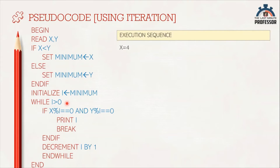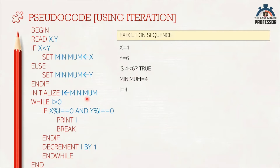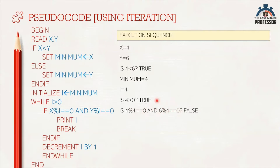The user input x is 4 and y is 6. We find the minimum of x and y: since x is less than y (4 < 6), the minimum is 4, stored in variable minimum. We initialize i equal to minimum, so i equals 4. While i is greater than 0 — is 4 greater than 0? Yes. We check: is 4 modulo 4 equal to 0 and 6 modulo 4 equal to 0? The first is true but the second is not, so the AND returns false. The if block is skipped, and we decrement i by 1, so i becomes 3.